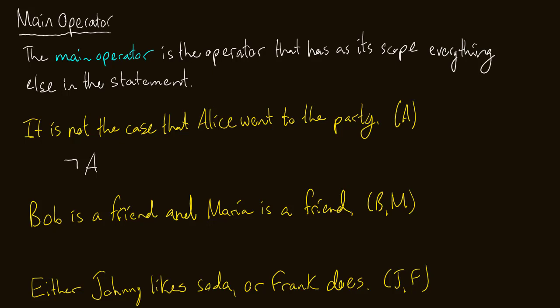Next one: 'Bob is a friend and Maria is a friend.' We're using B and M. It looks like we're just going to have B·M, because dot, remember, is our conjunction operator.